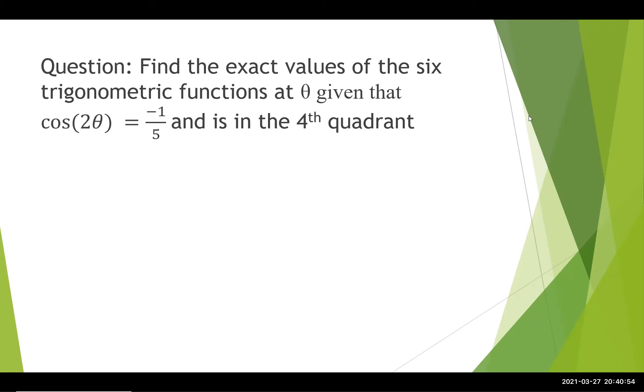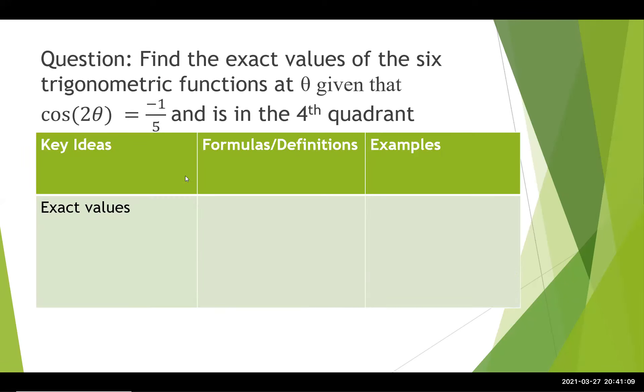Notice that the question talks about exact values. You're given theta, you need to find the values at theta, but you're given 2 theta, and we're also given a quadrant. So let's talk about why those things are important. First, why does it matter that it says exact values? When we talk about exact values, that means we don't want decimals. We only want fractions, integers, or square roots. For example, one-half, square root of 3 over 2, or negative 2.